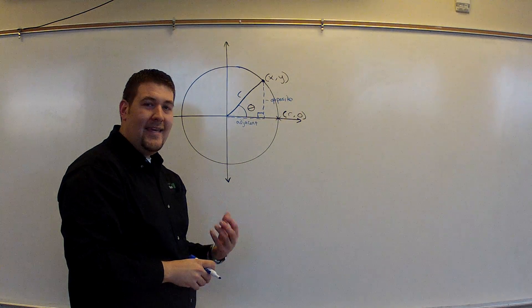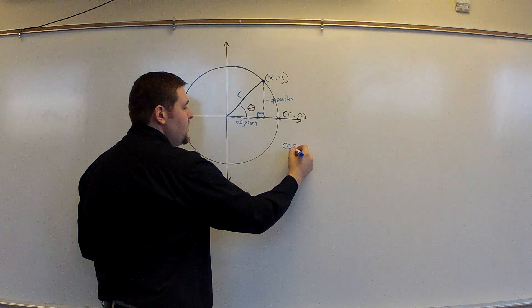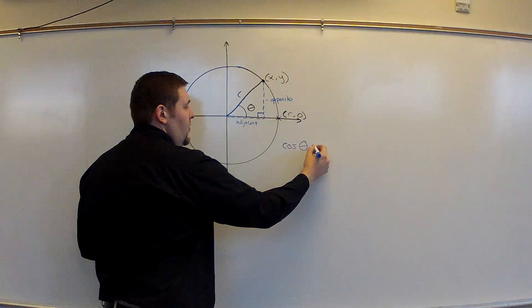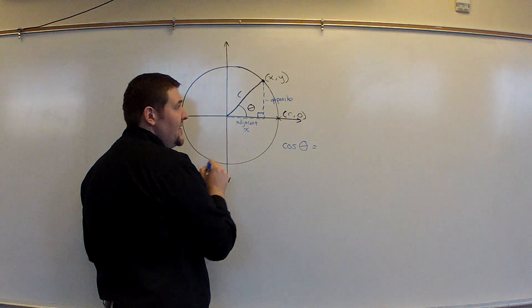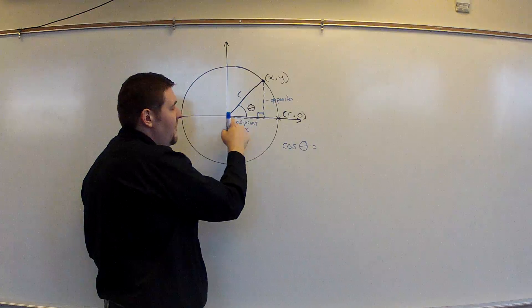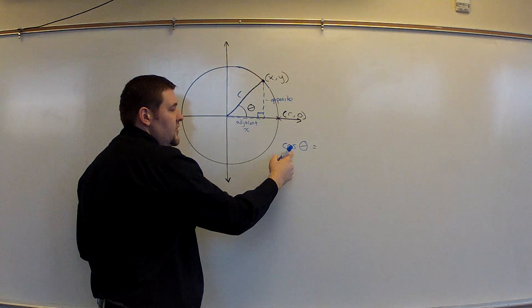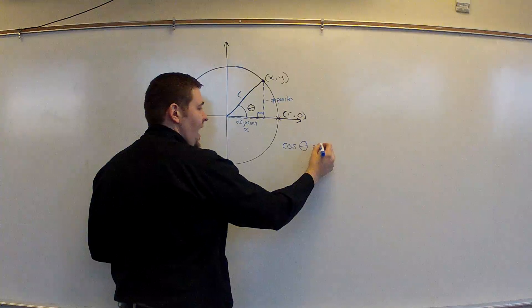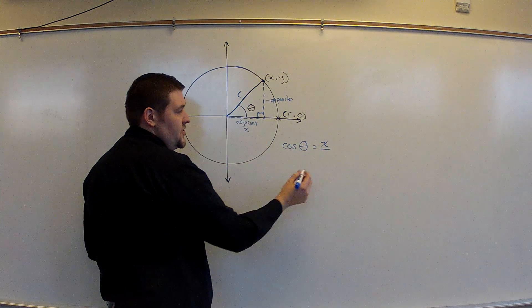And so we can begin to write out the trig ratios by saying that the cosine of your angle theta would be equal to the adjacent side, which I'm going to deal with as x, because it would be the x component of that coordinate. We're going x horizontally, y vertically. So the cosine of theta would be the adjacent side, x, over its hypotenuse, which is the radius of your circle, r.